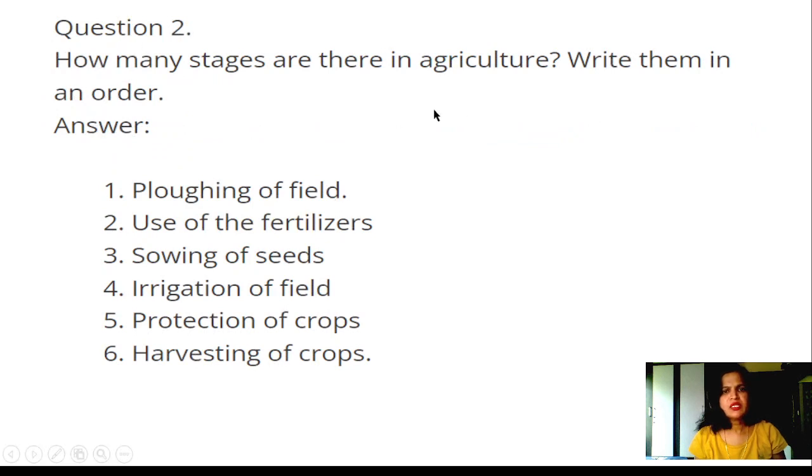Question 2: How many stages are there in agriculture? Write them in order. Answer: 1. Ploughing of field, 2. Use of fertilizers, 3. Sowing of seeds, 4. Irrigation of field, 5. Protection of crops, 6. Harvesting of crops.